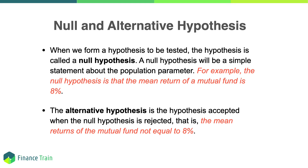Such a statement is called a hypothesis, and a hypothesis test is a standard procedure to test the hypothesis. There could be two possible results: the hypothesis is correct and should be accepted, or the hypothesis is incorrect and should be rejected. When we form a hypothesis to be tested, it is called a null hypothesis — a simple statement about the population parameter. For example, the null hypothesis is that the mean return of a mutual fund is 8%. The alternative hypothesis is accepted when the null hypothesis is rejected, i.e., the mean returns of the mutual fund is not equal to 8%. In hypothesis testing, the researcher is generally trying to challenge the null hypothesis by using sample data to draw conclusions about an entire population.